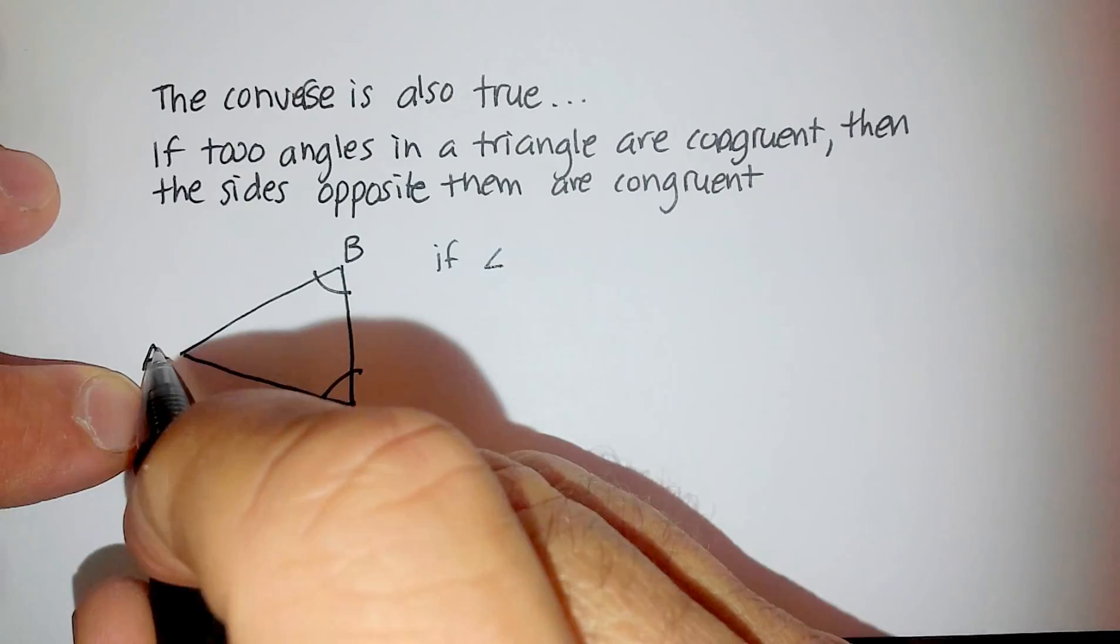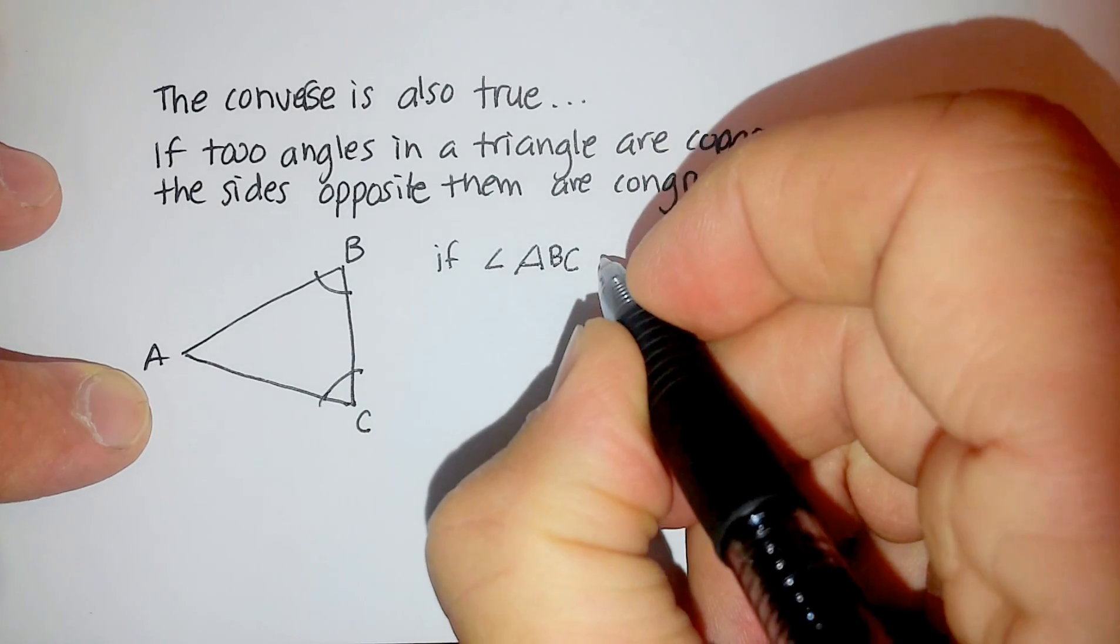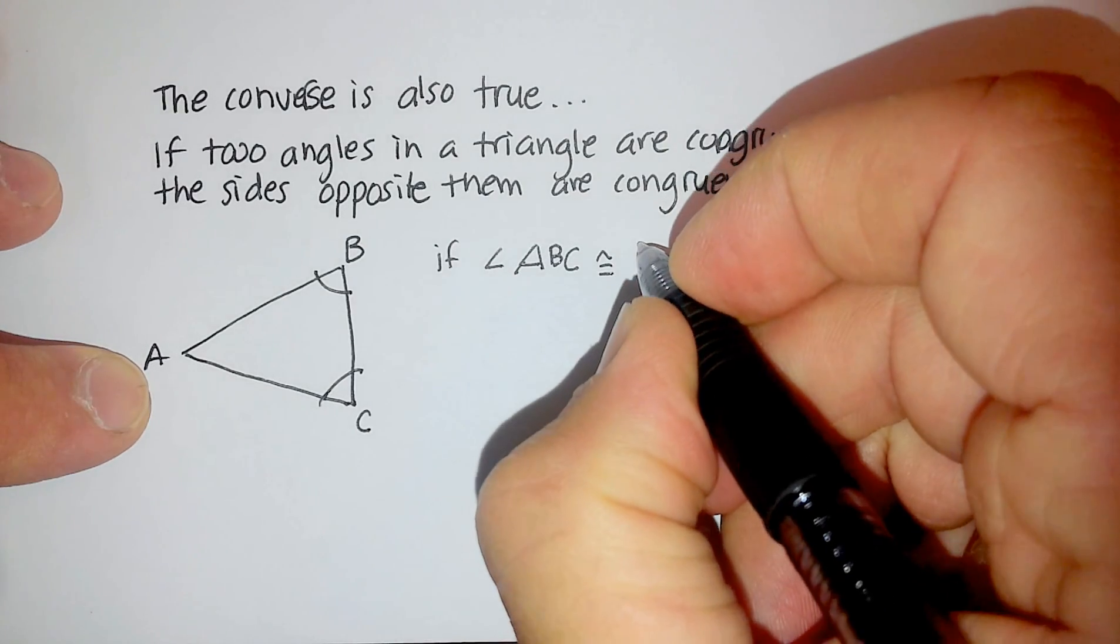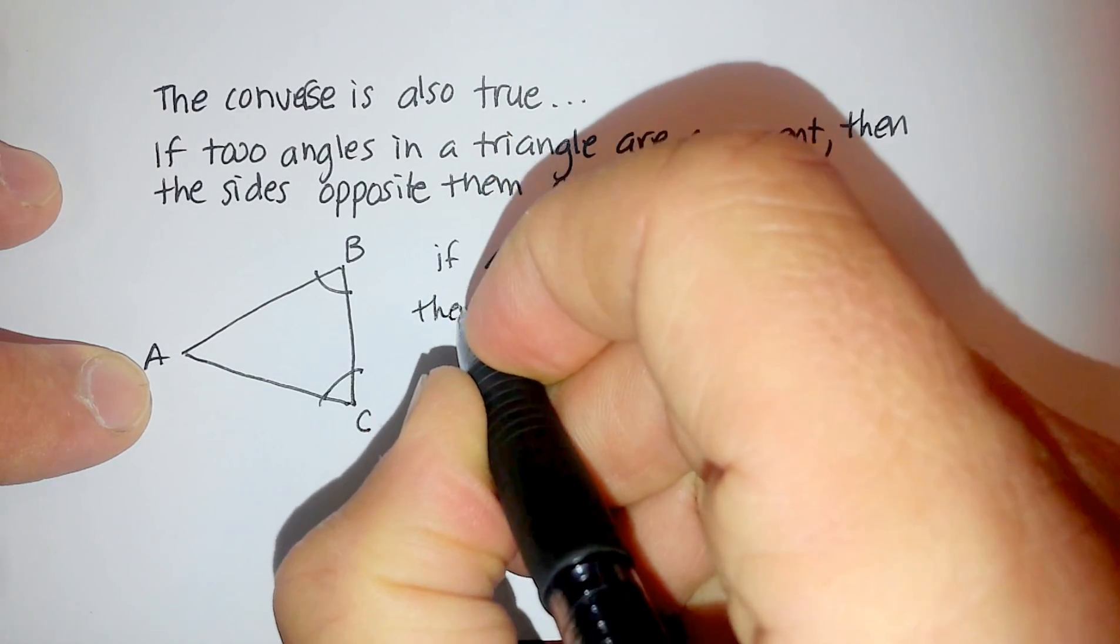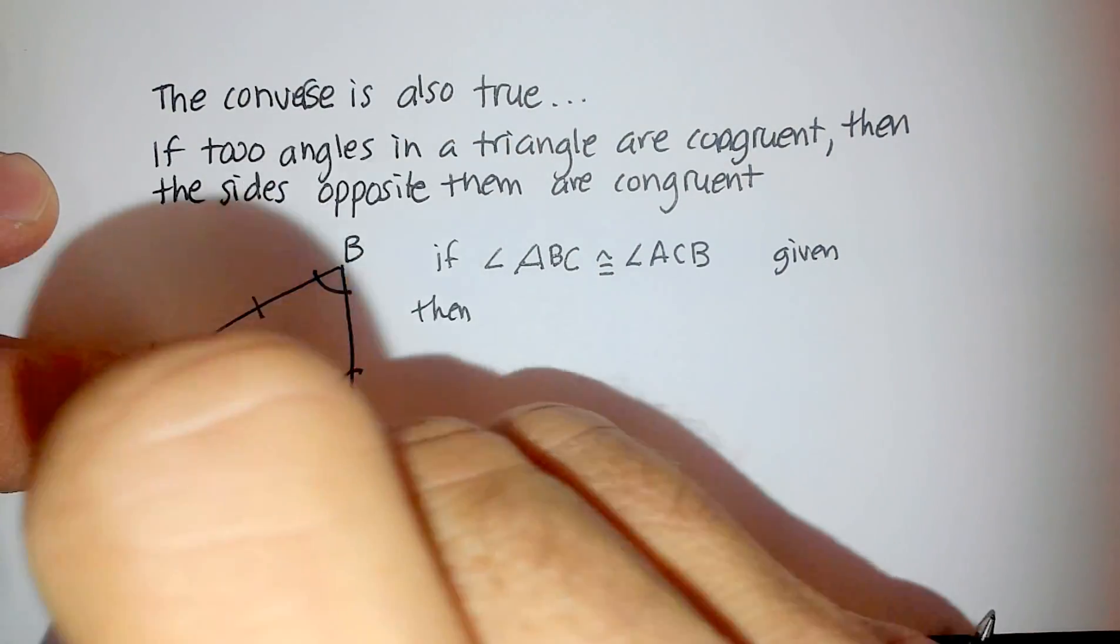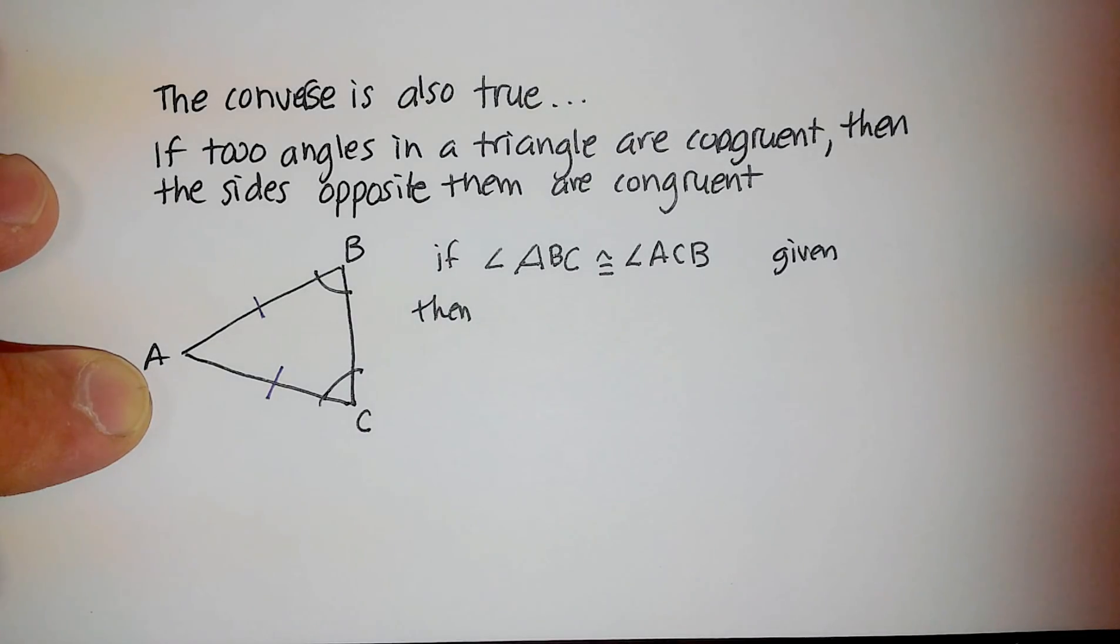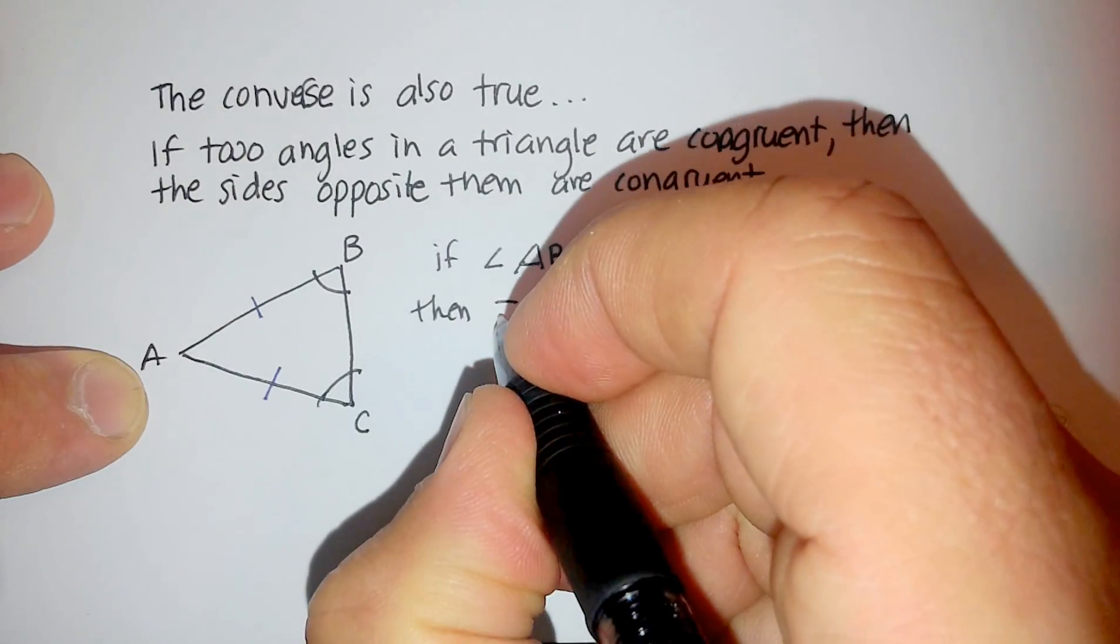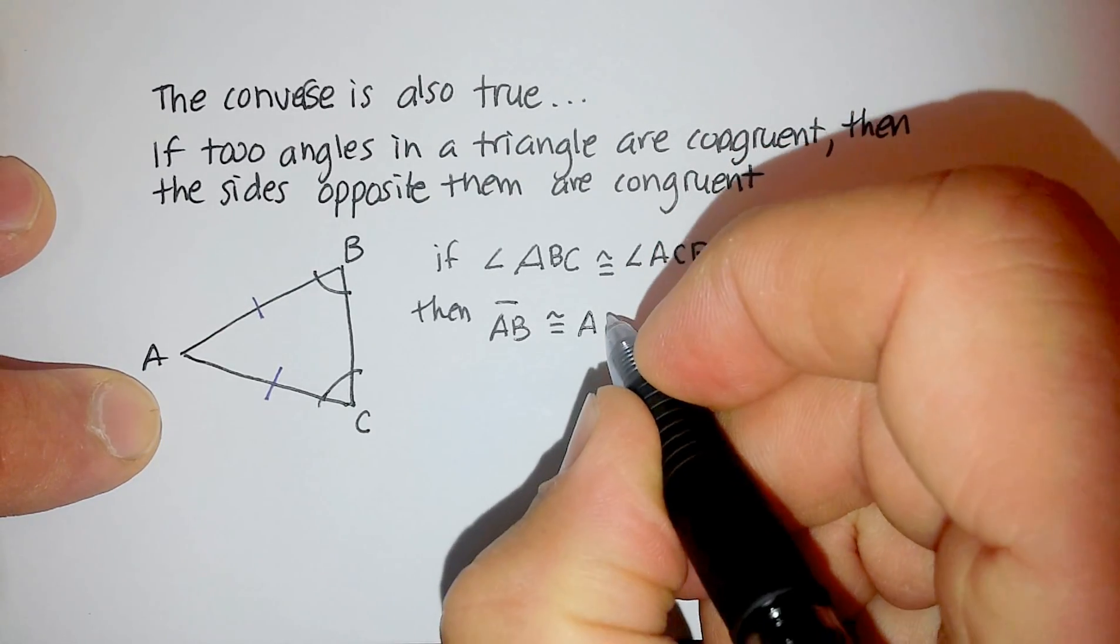So if angle ABC is congruent to angle ACB, again, that's a given, then side or line segment AB is congruent to line segment AC or side AC. So then, line segment AB would be congruent to line segment AC.